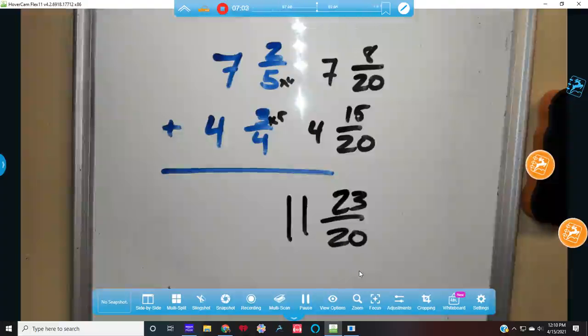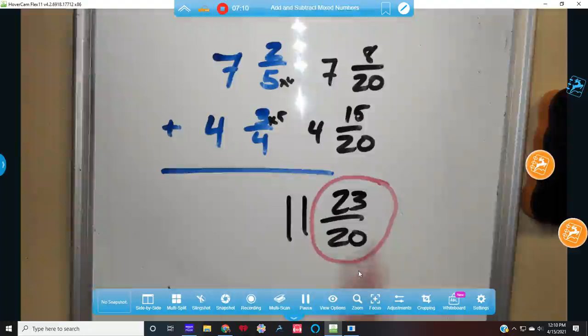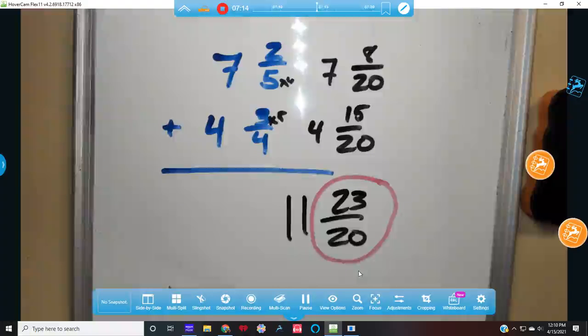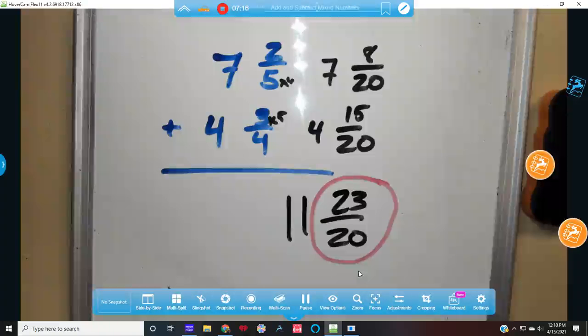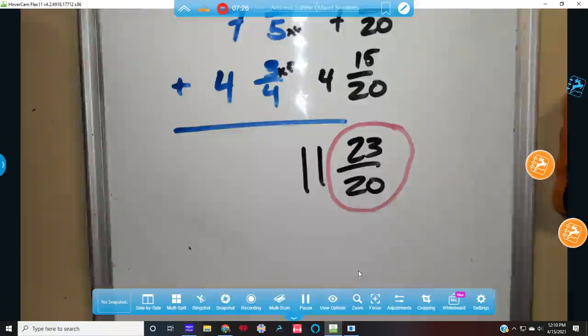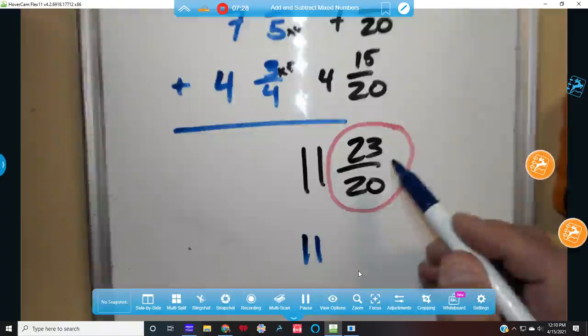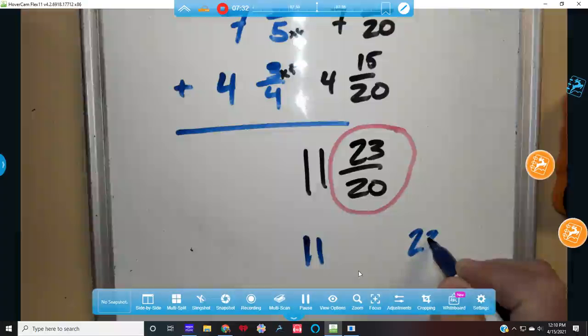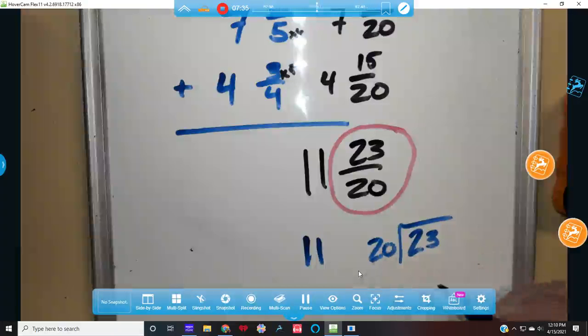8 and 15 is 23 twentieths, and 7 plus 4 is 11. Am I done? No. Why am I not done? I'm not done because this is not okay. I can't have an improper fraction with a mixed number.